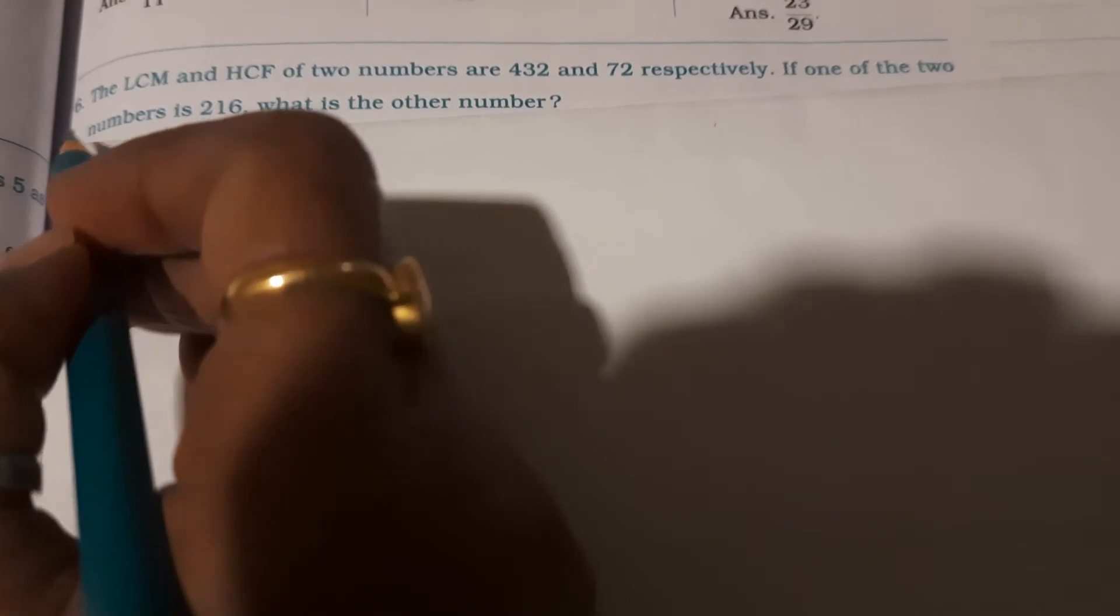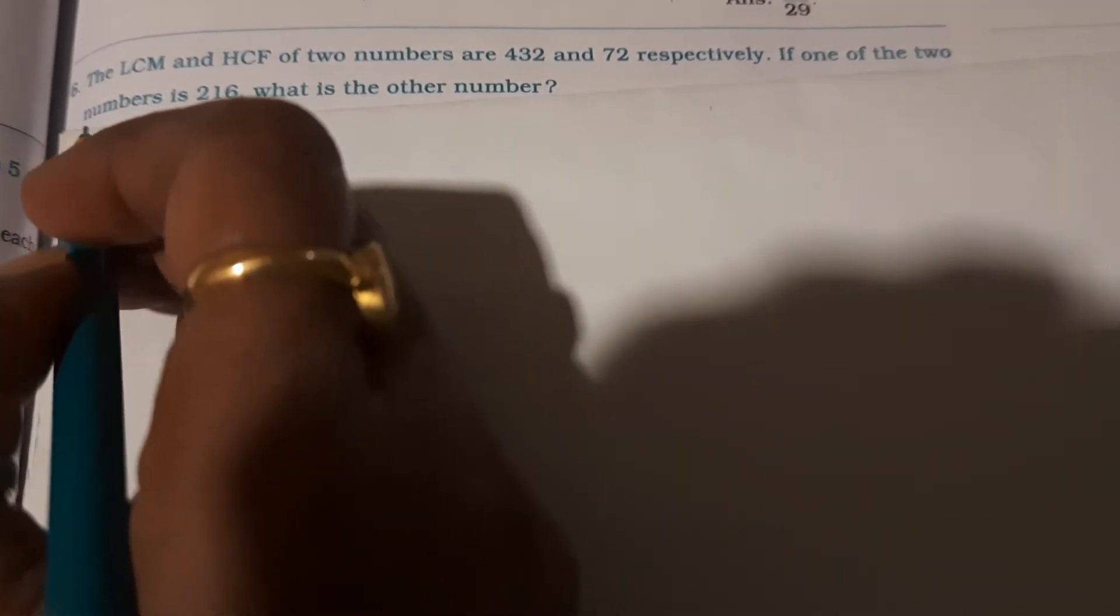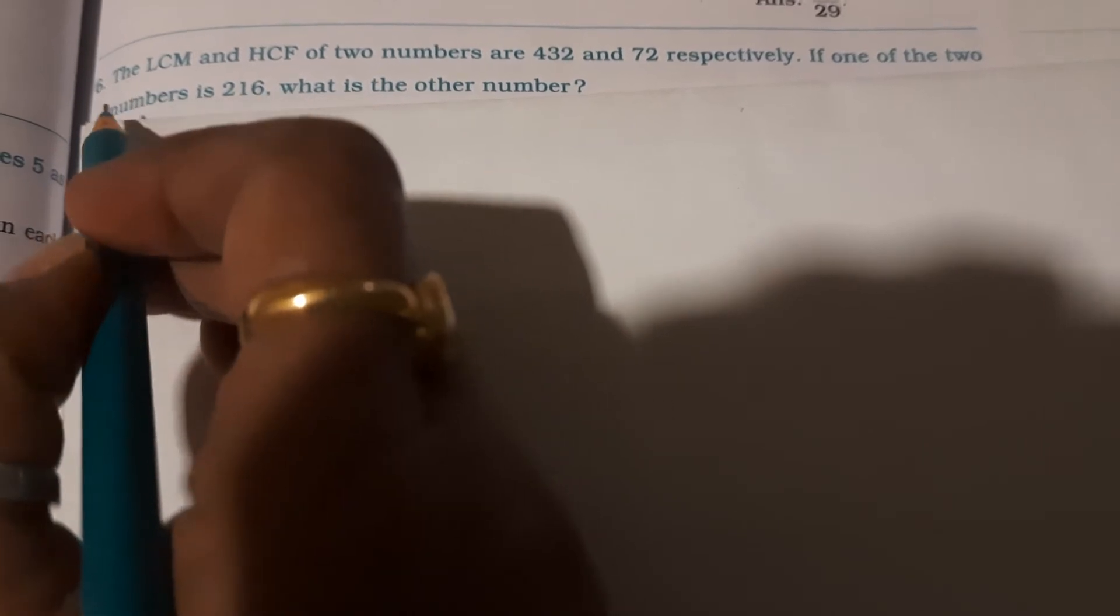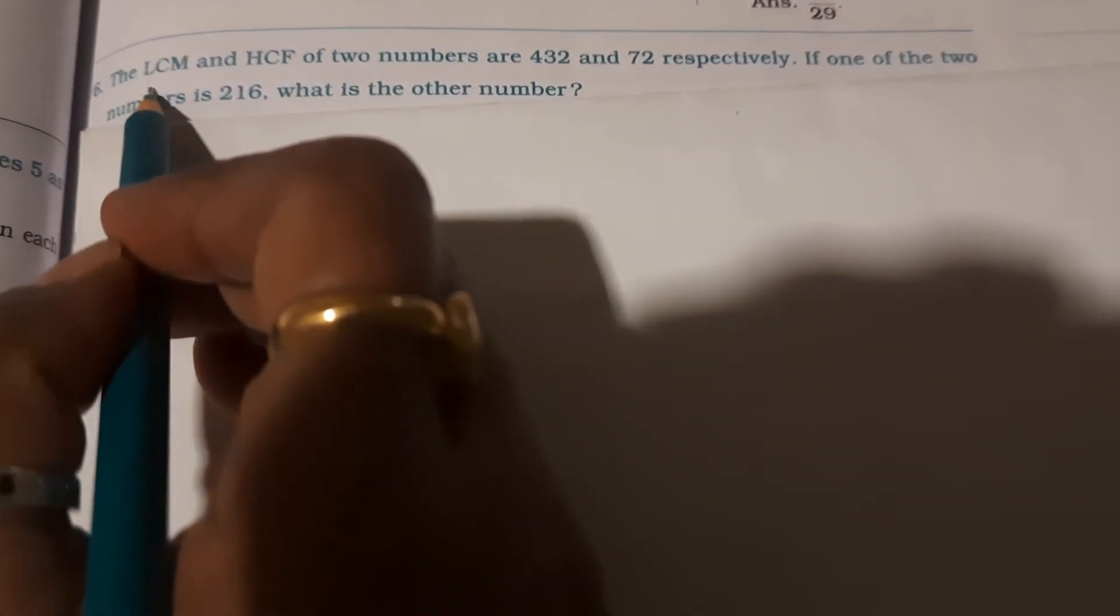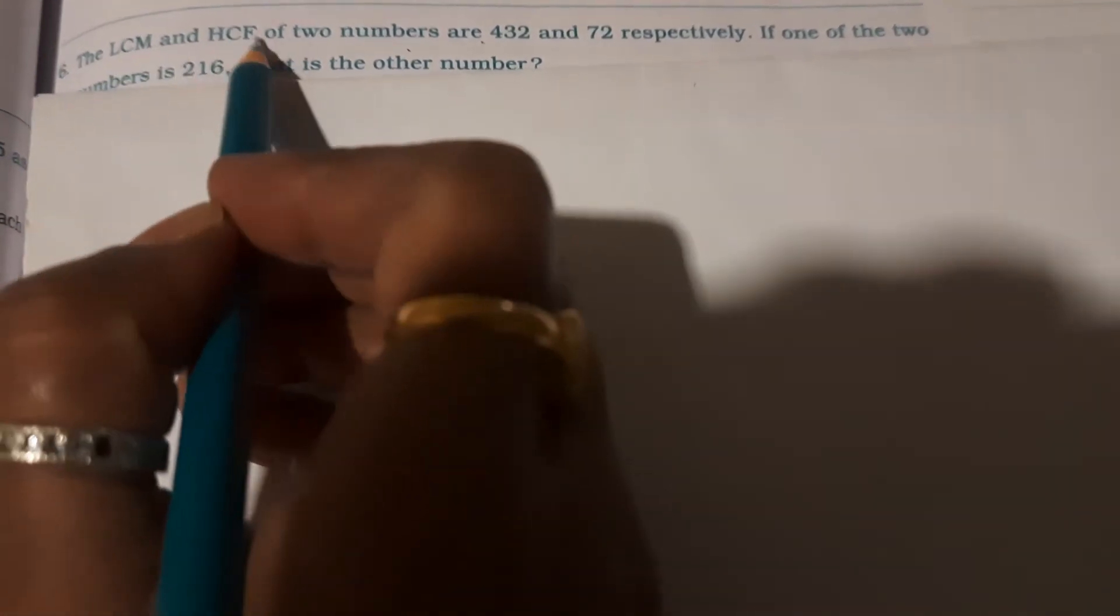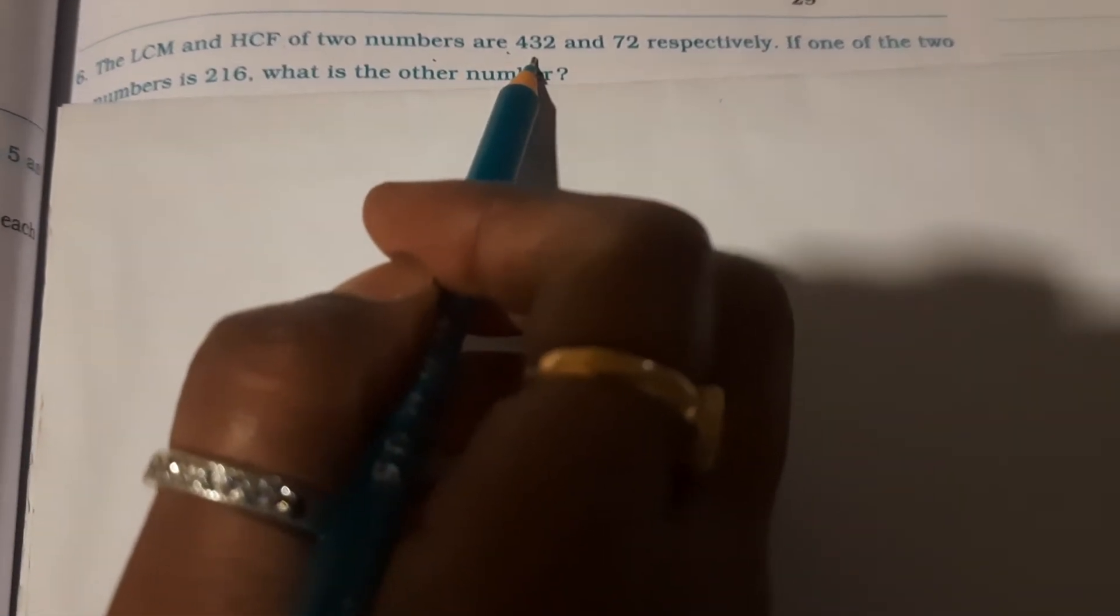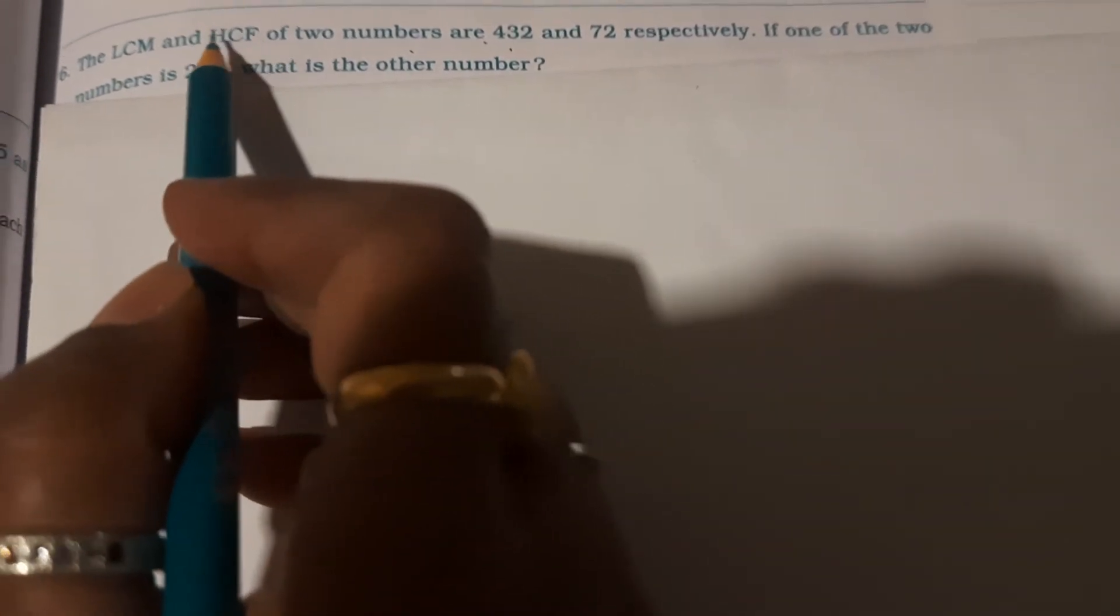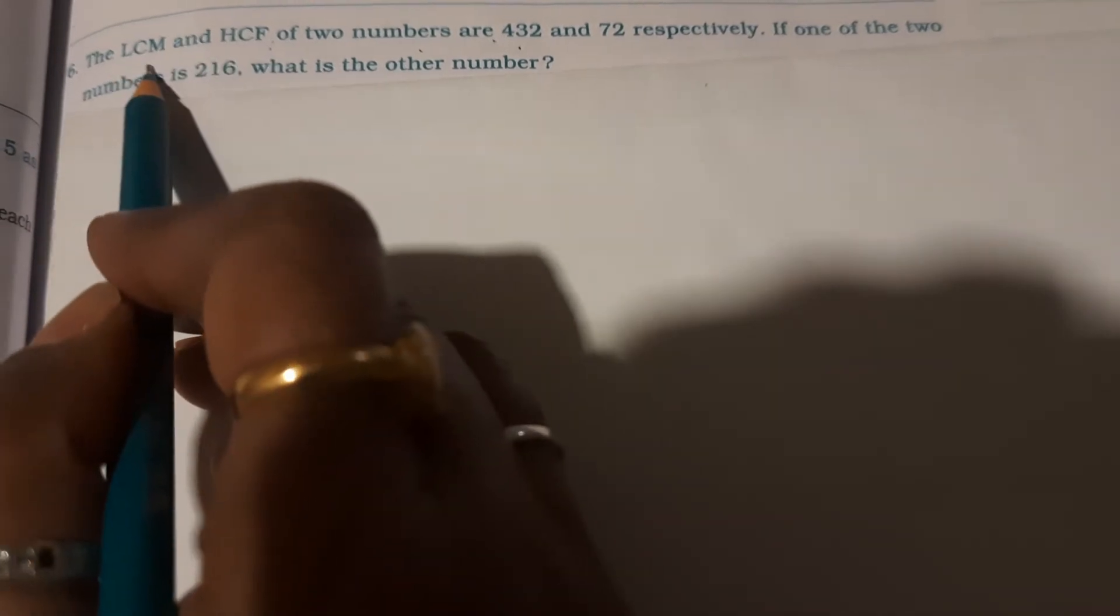Next is word problem children. Fourth one and fifth one I will continue in the next video. Sixth one: the LCM and HCF of two numbers are 432 and 72 respectively. See, LCM and HCF respectively means the first one, 432, belongs to LCM and 72 belongs to HCF. HCF is 72.